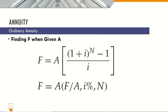Finding F or the future amount when given A or the annuity value: F is equal to A times the quantity of (1 plus i) raised to n minus 1, all over i. This quantity can be represented by the symbol F given A at i percent and at n interest periods.